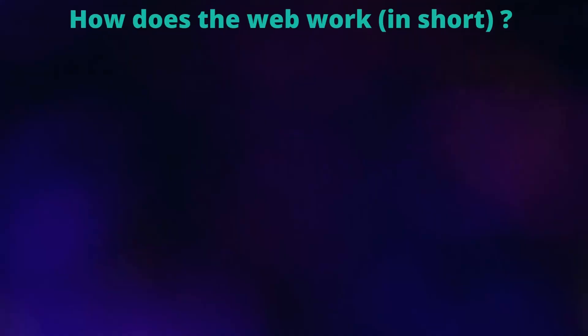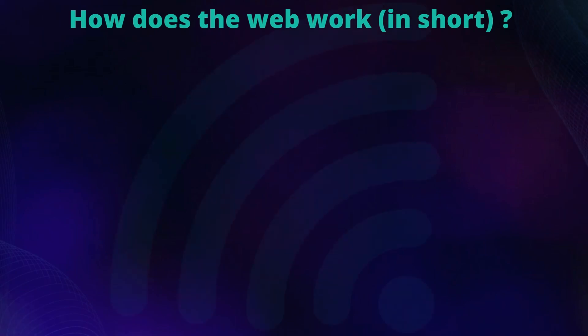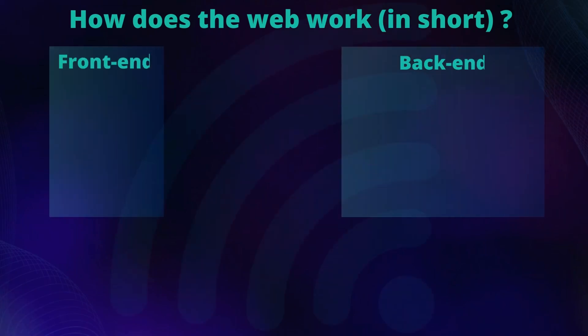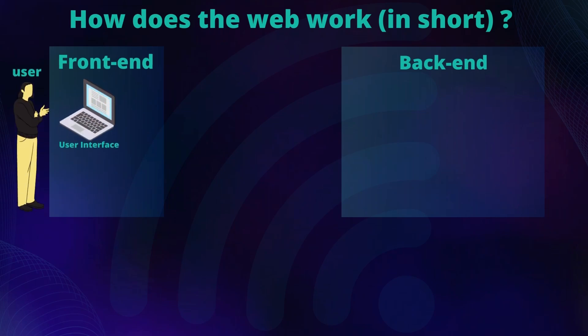Have you ever wondered how the web works? Well, let's take a look. First of all, we need an internet connection to make the front end and back end of a web application communicate together. But what exactly are the front end and back end? The front end is what you see on your screen — the buttons, images, text, and other visuals. The front end is basically the whole user interface.